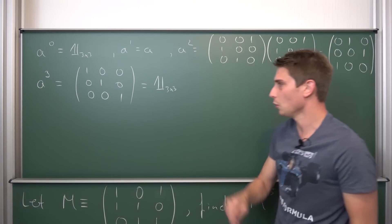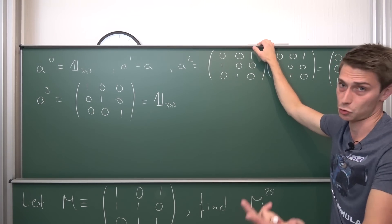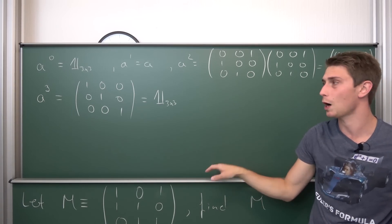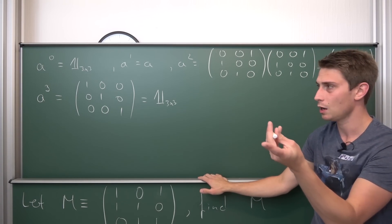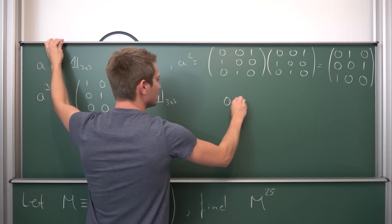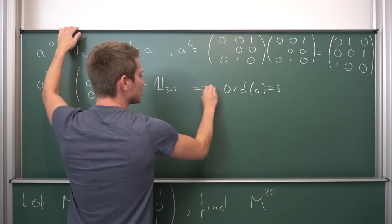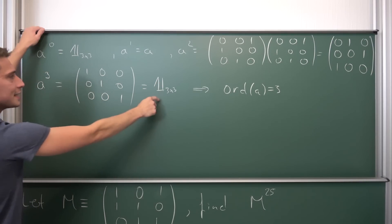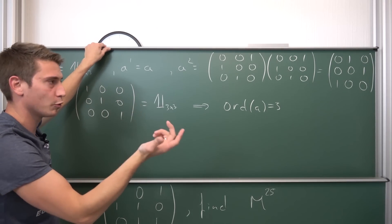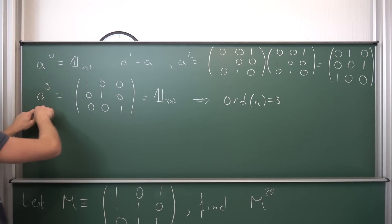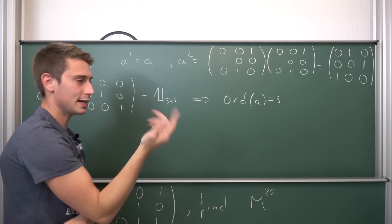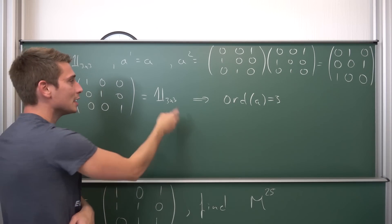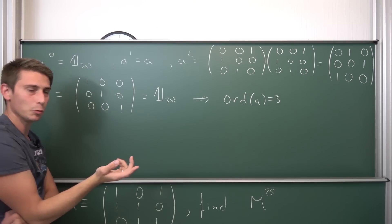Speaking in group-theoretical terminology, this is what we call a cyclic element of a group. If we raise an element to some power and we get the identity of the respective group out on the other side, then it has a certain order. The order of A is going to be three. A to the 4th power is A, A to the 5th power is A squared, A to the 6th power is the identity - it's cyclic. It returns back to the identity at some point.